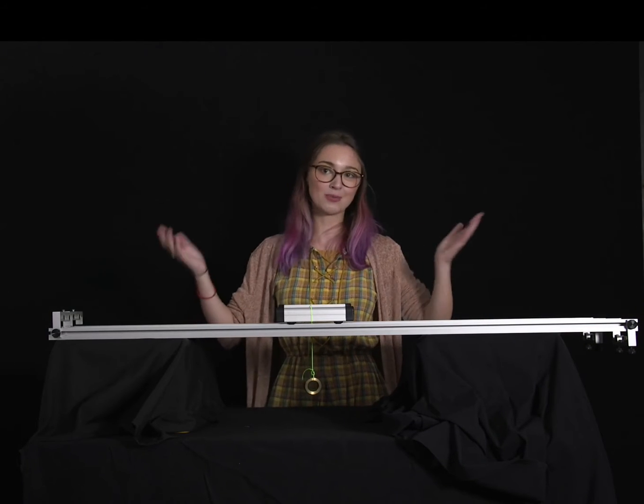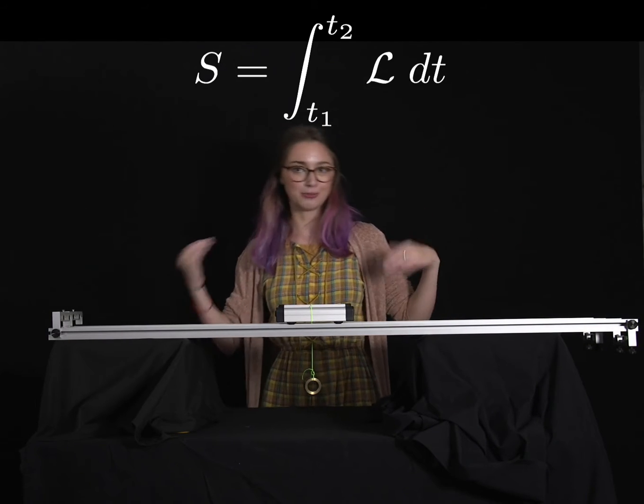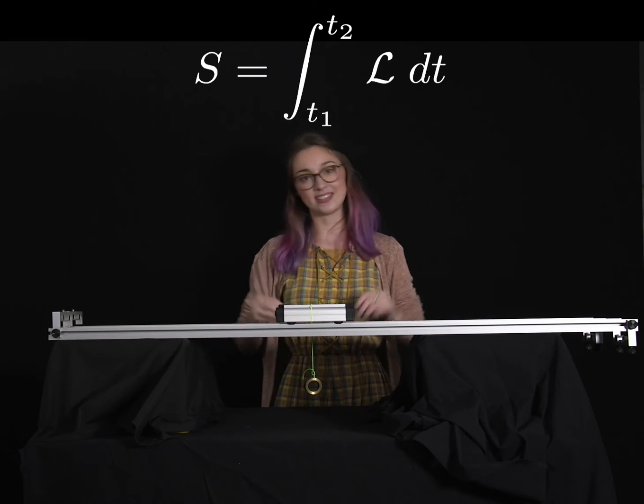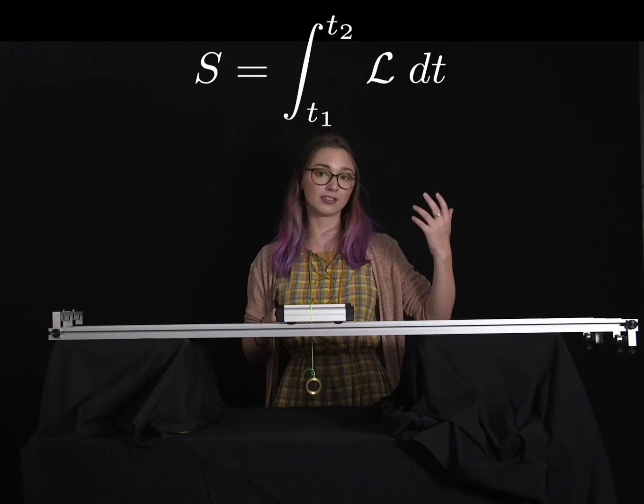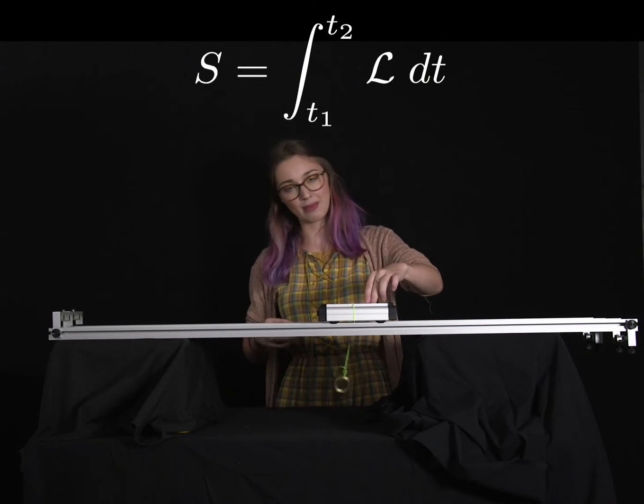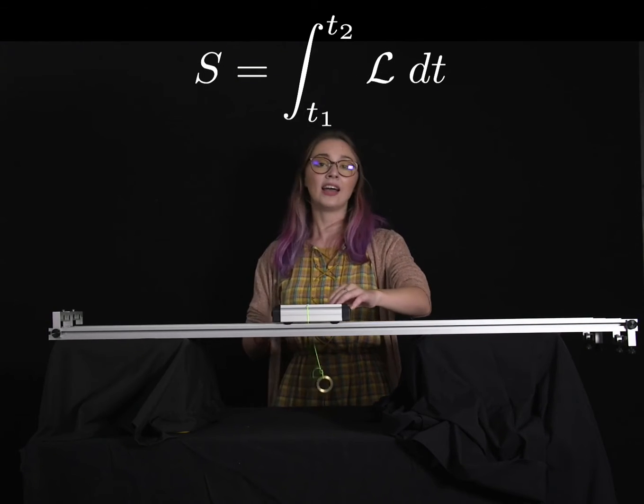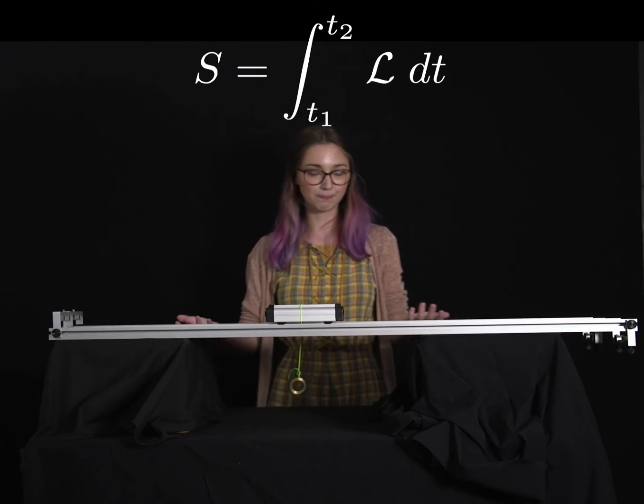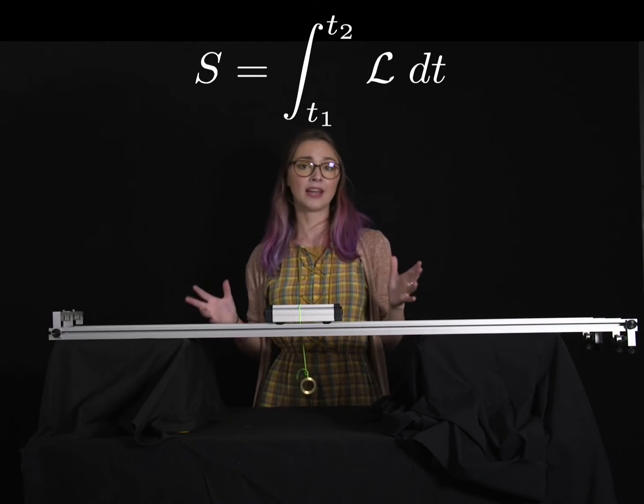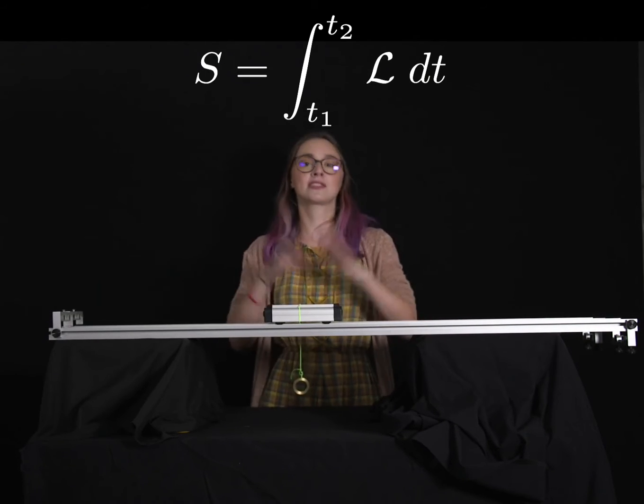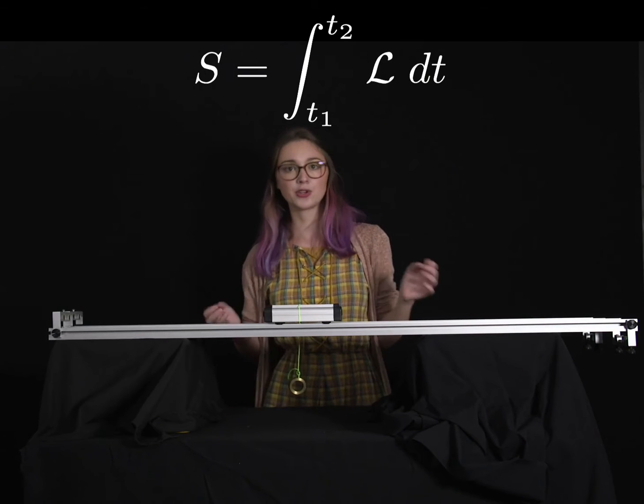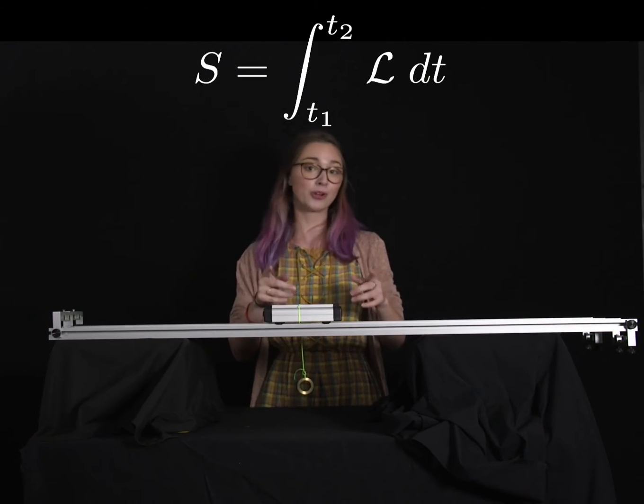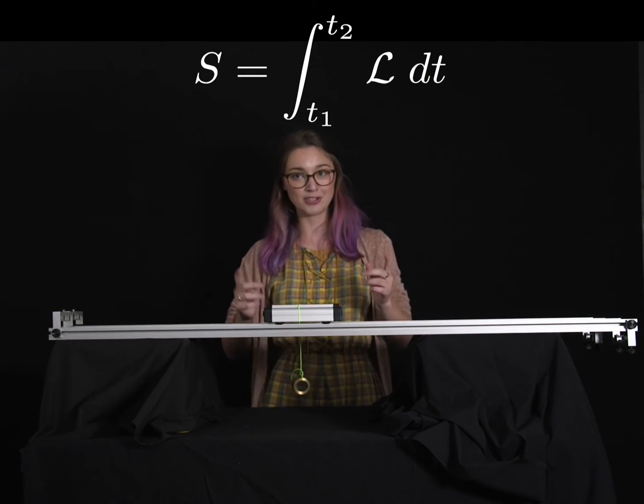So we can define action this fancy way with S is the integral from t1 to t2 where t1 is our initial time, t2 is the final time. L is our Lagrangian which I'll be discussing later and dt is obviously time. So this equation looks scary but it's actually really beautiful and combines a lot of really cool things in physics. So don't be scared of it and even more don't be scared of it because we're now going to put it away and just look at this L.